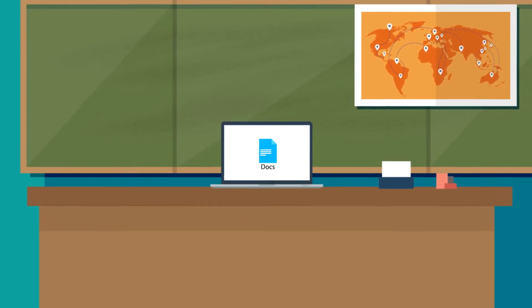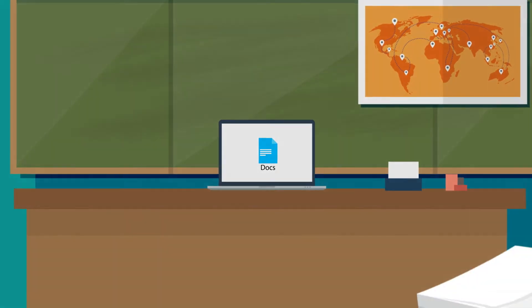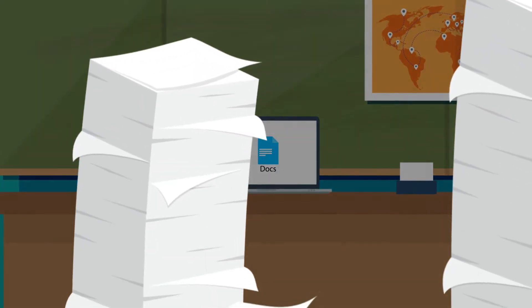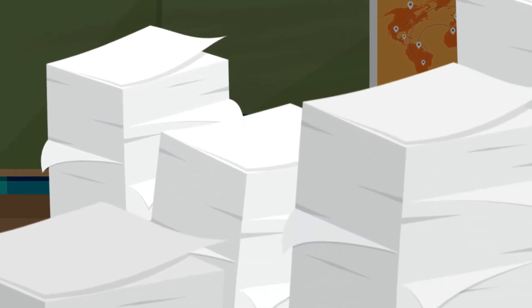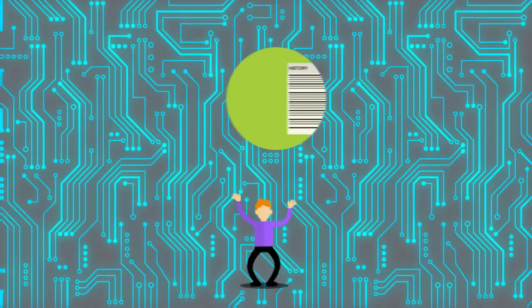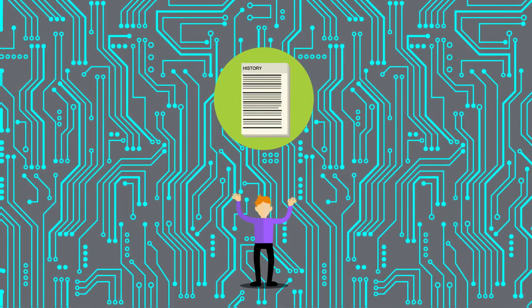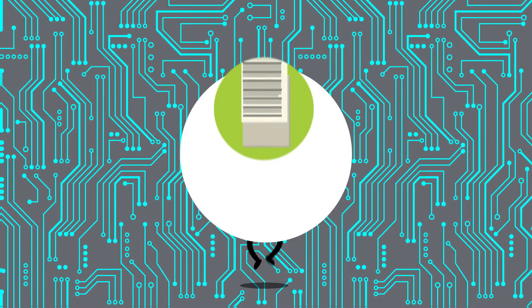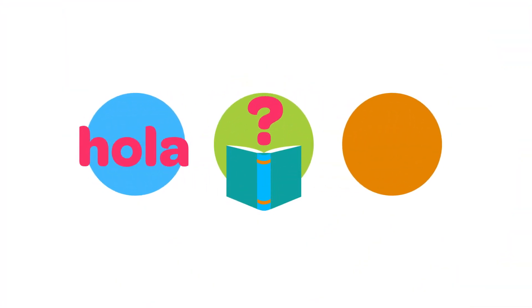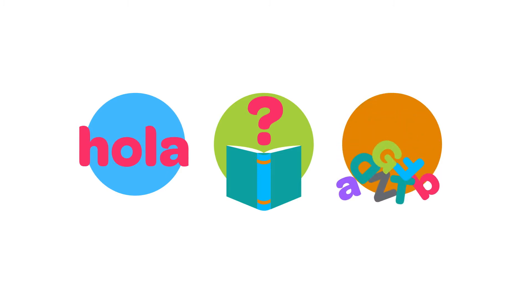Schools are going digital, but there's still an awful lot of paper in most classrooms, from printed textbooks to worksheets, articles, essays, and more. And even if they've been scanned electronically, all these documents may still be inaccessible to students who need extra help, from struggling readers and English language learners to young people with dyslexia or other learning difficulties.